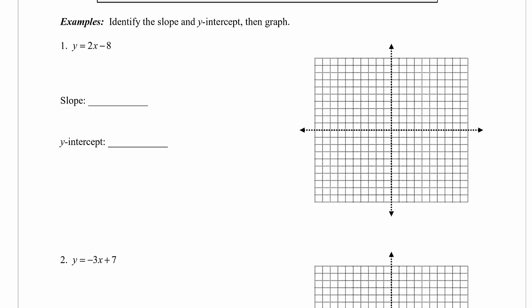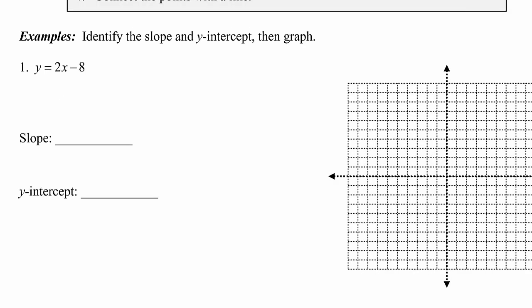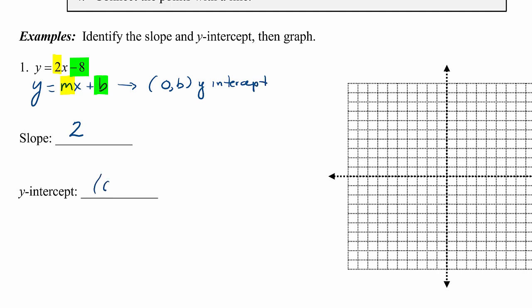In our first example, we identify the slope and the y-intercept and then graph. We have the line y equals 2x minus 8, which is already in slope-intercept form. Because it's in slope-intercept form, the slope is the coefficient of x, so the slope is 2. And our y-intercept has a y-coordinate of negative 8, because b corresponds to the ordered pair (0, b), which is the y-intercept. So our y-intercept for this line is (0, negative 8).